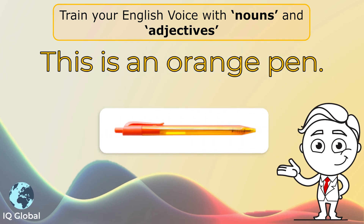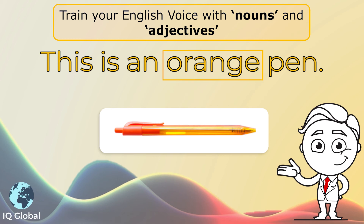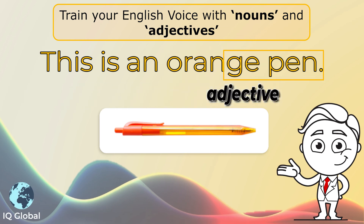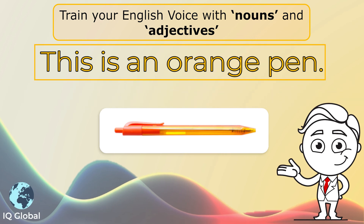Another example. This is an orange pen. The word pen is the noun because it gives a name to this thing. The word orange tells us more about this pen, so orange is the adjective. This is an orange pen.